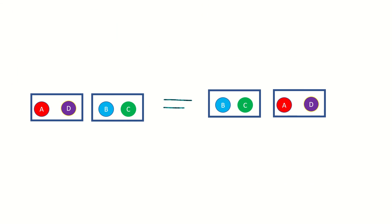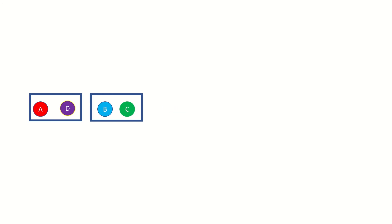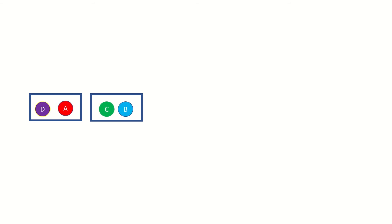An important point is that a, d in the first subset and b, c in the second subset is considered the same partition as b, c in the first subset and a, d in the second. In other words, the order of the subsets doesn't matter. Also, the order of the elements in the subsets does not matter either. All that matters is who is grouped with who, and this matters because the elements are distinct.